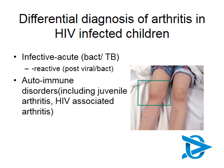We do also see autoimmune disorders in HIV-infected children, including juvenile arthritis. There is also a specific HIV-associated arthritis, usually in children with lower CD4 counts. Rheumatic fever can be seen in both HIV-negative and positive children. And of course, consider hemophilia as part of your differential.